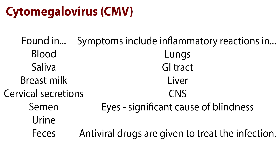Cytomegalovirus and herpes simplex virus types 1 and 2 are viruses that can significantly affect AIDS patients. CMV is found in blood, saliva, breast milk, cervical secretions, semen, urine, and feces. It usually doesn't cause symptoms in a person with an intact immune system, but in the HIV patient, symptoms include inflammatory reactions in the lungs, GI tract, liver, CNS, and eyes. CMV is a significant cause of blindness in the HIV patient, and antiviral drugs are given to treat the infection.